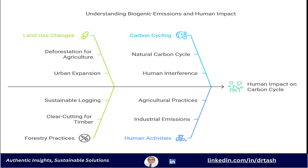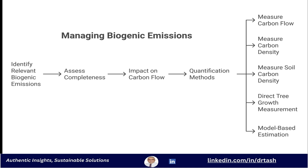We're mainly interested in that human impact — how our actions are affecting that natural carbon cycle, isolating the human signal from the natural background noise. This is where those principles of relevance and completeness really matter. The biogenic emissions we include have to be directly related to the organization's actions and complete enough to capture their full impact. We need a clear picture of how their actions — whether it's deforestation or reforestation — are impacting that carbon flow. There are a bunch of ways to quantify these emissions, from measuring tree growth directly to using models to estimate changes in carbon based on land use and management practices.